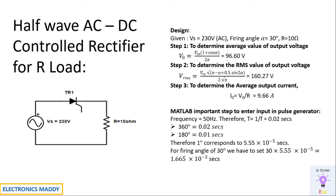One of the most important steps when entering input parameters in the pulse generator in MATLAB is that the frequency is usually 50 Hz for AC supply in India. So the reciprocal of frequency is 0.02 seconds, meaning 360 degrees corresponds to 0.02 seconds, and 180 degrees corresponds to 0.01 seconds. Therefore, every degree corresponds to 5.55×10⁻⁵ seconds. That means for a firing angle of 30 degrees, we multiply 30 by 5.55×10⁻⁵ to get 1.665×10⁻³ seconds, which we enter in MATLAB.